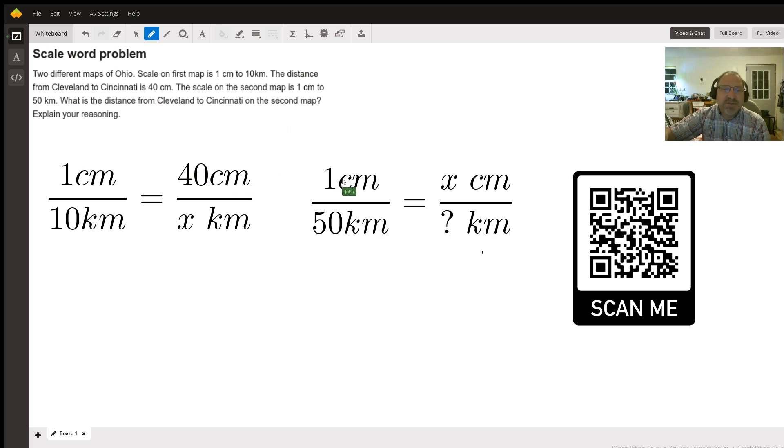However, the scale is different. It's one centimeter equal to 50 kilometers, and they want to know if the distance from Cleveland to Cincinnati measures 40 centimeters on the first map, how many centimeters is it going to be on the second map? What we have here are some equivalent fractions—we've set up a proportion, also called a ratio, of one centimeter for every 10 kilometers.